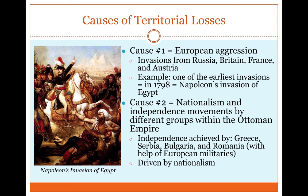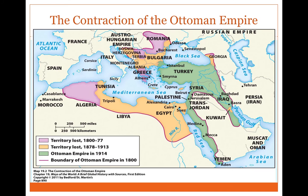The growth of nationalism is going to basically contribute to the increasing decline of the Ottomans. I want to zoom into this map for a moment and get a sense of how the Ottoman Empire is declining physically. It's important to realize it was a gradual process.